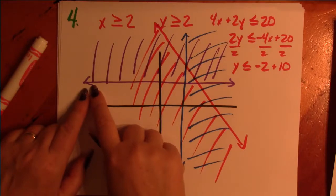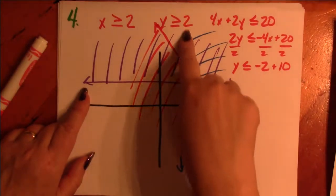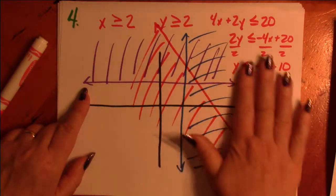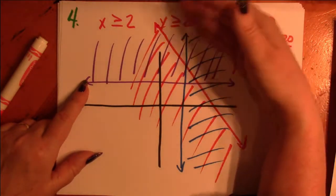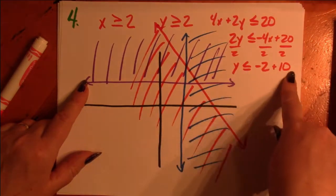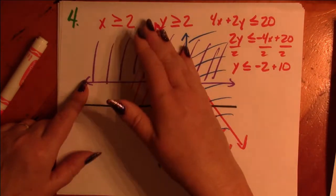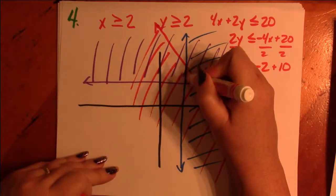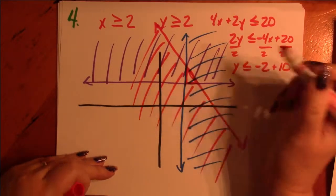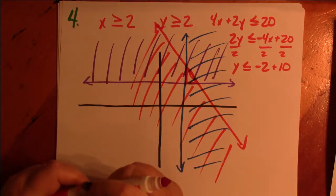So we've graphed X is greater than or equal to 2, which means that's the blue on this side. Y is greater than or equal to 2, so that's the purple up here. And then we've graphed this diagonal line showing lower here. So we're actually only talking about this triangle right here. And my triangle is a little smaller than it probably should be.